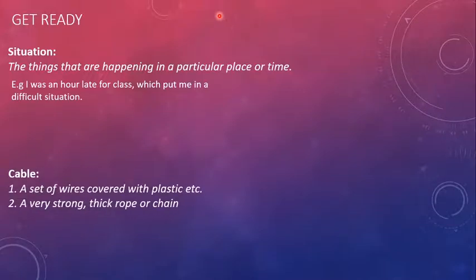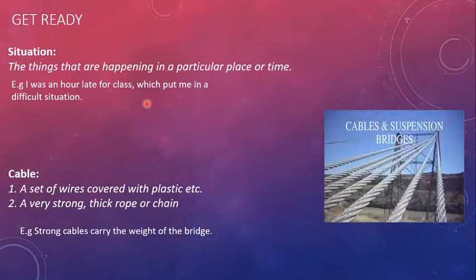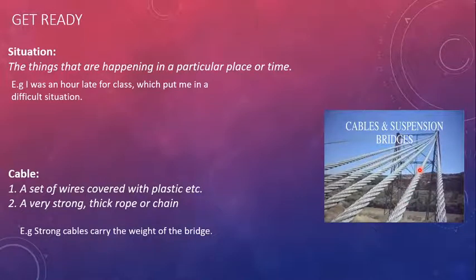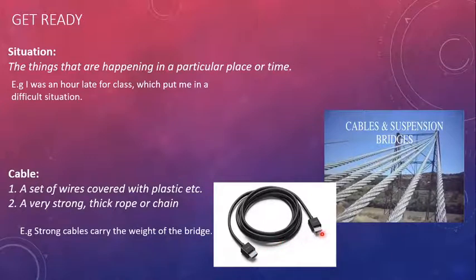The next word is 'cable.' Cable has two meanings: first, a set of wires covered with plastic; and second, a very strong, thick rope or chain. For example, strong cables carry the weight of the bridge. As you can see in the picture of the suspension bridge, the huge long steel chains or ropes are cables holding the bridge. Also, a wire covered with plastic to protect it from damage, used for data transmission or charging, is also called a cable.